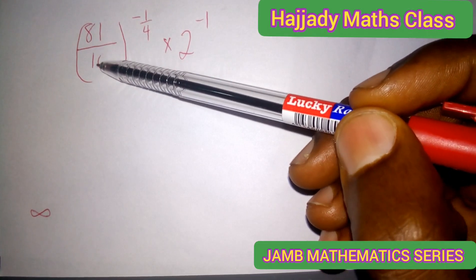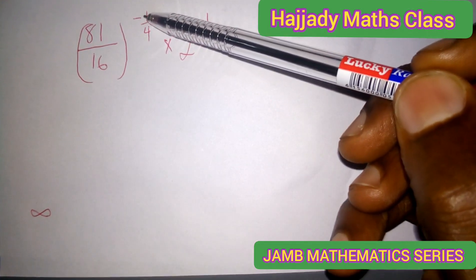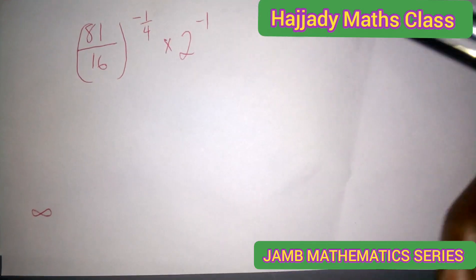Here we have 81 over 16 all raised to the power of minus 1 over 4 times 2 raised to the power of minus 1.